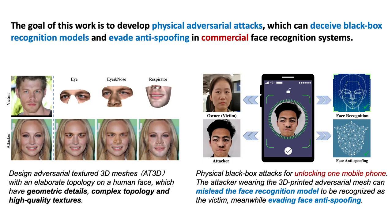The goal of this work is to develop physical heterotypes which can distill black-box face recognition models and evade anti-spoofing in commercial facial recognition systems. We design adversarial-type 3D meshes and elaborate topologies on the human face with geometric details, complex topologies, and high-quality textures. We show physical black-box attacks for unlocking a mobile phone: the attacker wearing the 3D mask can mislead the face recognition model to be recognized as the victim, while evading face anti-spoofing.